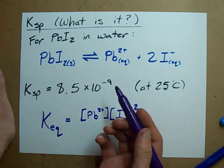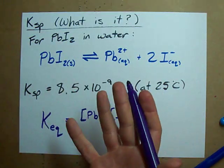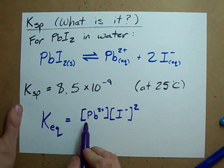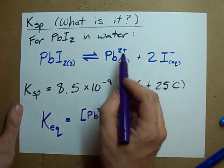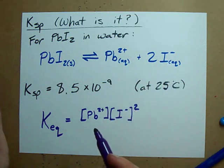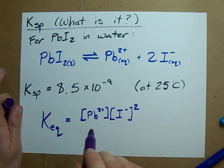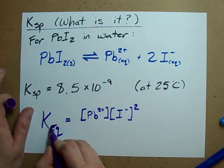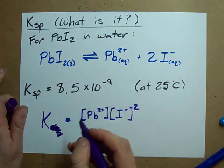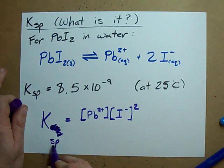Now, for all reactions where you're dissolving a solid, you're always going to ignore the solid. So, it's always just the product of the concentrations of the ions you form, including any relevant powers. This is special because it's the equilibrium expression for something dissolving. And that's why, rather than KEQ, we call it KSP, because it's special.